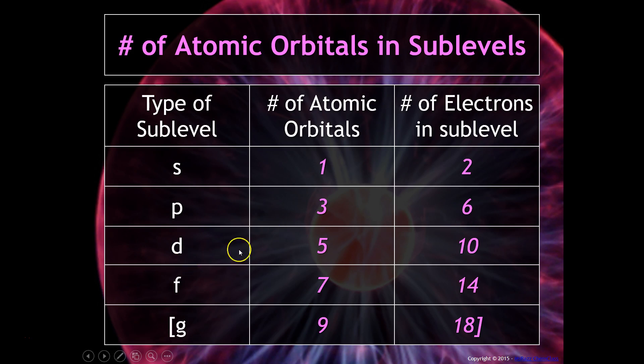In the d sublevel, there are a total of five different orientations, or five orbitals, and that can hold ten electrons. The f sublevel has seven orientations and can hold fourteen electrons. Following the pattern, g would have nine orbitals and can hold eighteen electrons.